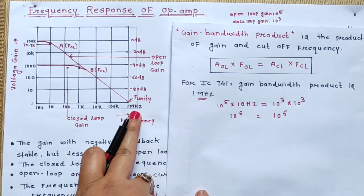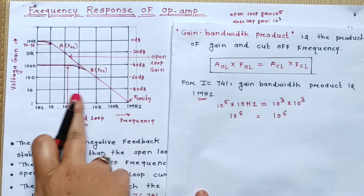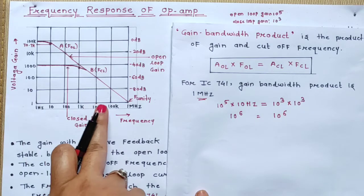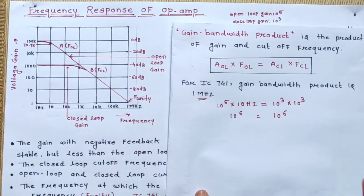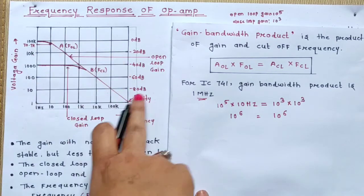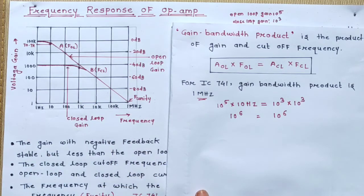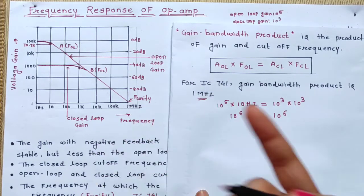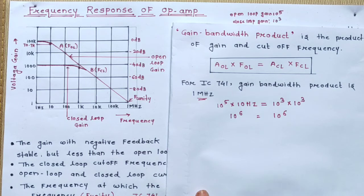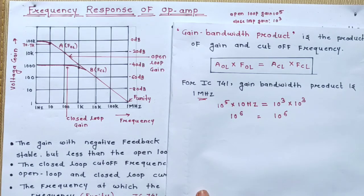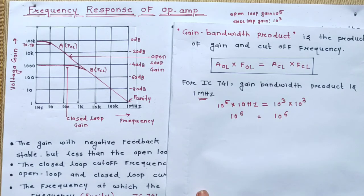For every point on the frequency response curve, the gain-frequency product equals 1 MHz. For example, a gain of 1 gives 1 MHz, and 100k multiplied by 10 also gives 1 MHz. So whenever you draw the frequency response curve of the operational amplifier, remember that the gain bandwidth product for IC 741 is 1 MHz.